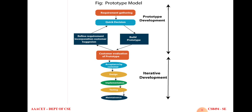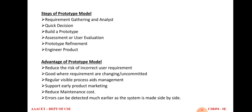The same process applies: between requirement gathering and design, a quick decision is taken, a prototype is built and given to the customer. After customer evaluation, requirements are refined and accepted before going to the design part. The steps in the prototype model are: requirements gathering, quick decision, build prototype, customer acceptance, prototype refinement, and finally the software product.